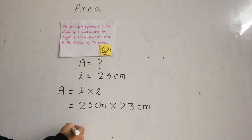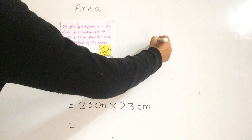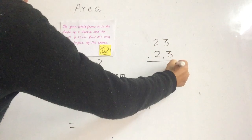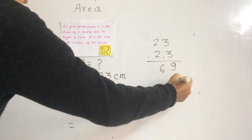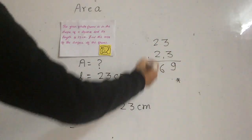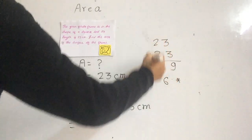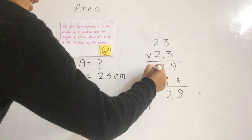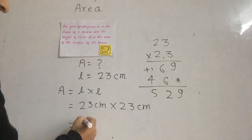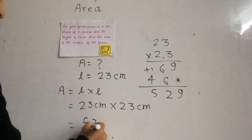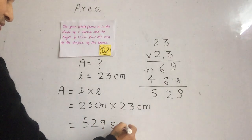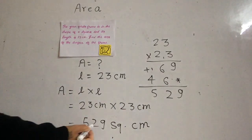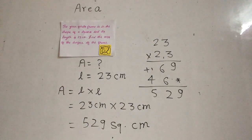So what is 23 times 23? We work it out: 3 times 3 is 9, 3 times 2 is 6; then 2 times 3 is 6, 2 times 2 is 4. Adding: 9, then 6 plus 6 is 12 — carry over 1 — giving us 529. So the area is 529 square centimeters. This is the area of this frame.